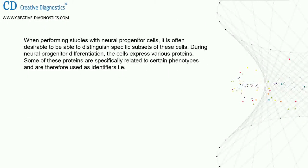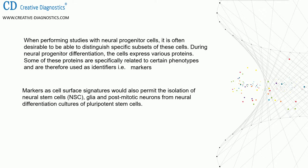When performing studies with neural progenitor cells, it is often desirable to be able to distinguish specific subsets of these cells. During neural progenitor differentiation, the cells express various proteins. Some of these proteins are specifically related to certain phenotypes and are therefore used as identifiers — that is, markers. Markers as cell surface signatures would also permit the isolation of neural stem cells, glia, and post-mitotic neurons from neural differentiation cultures of pluripotent stem cells.